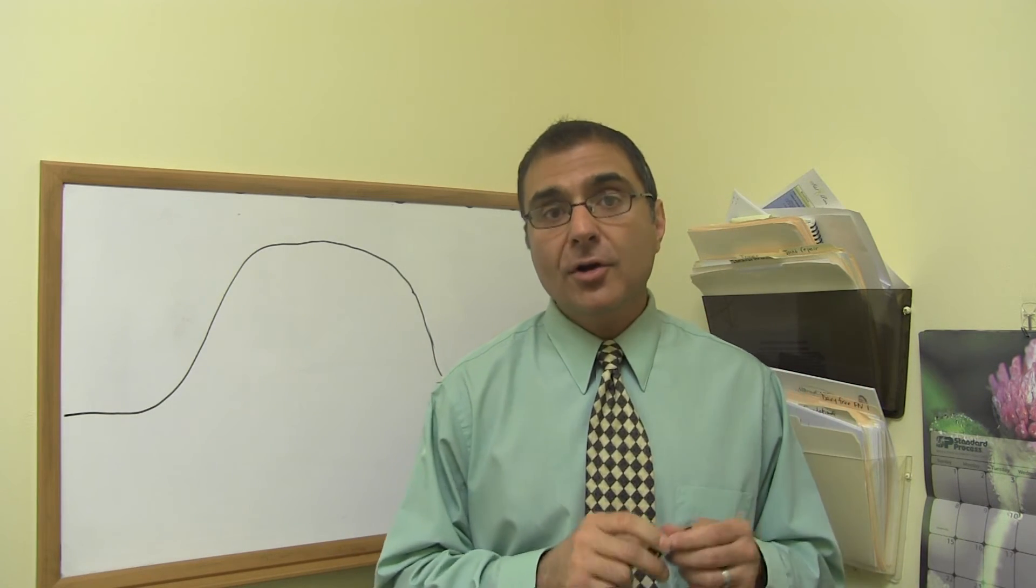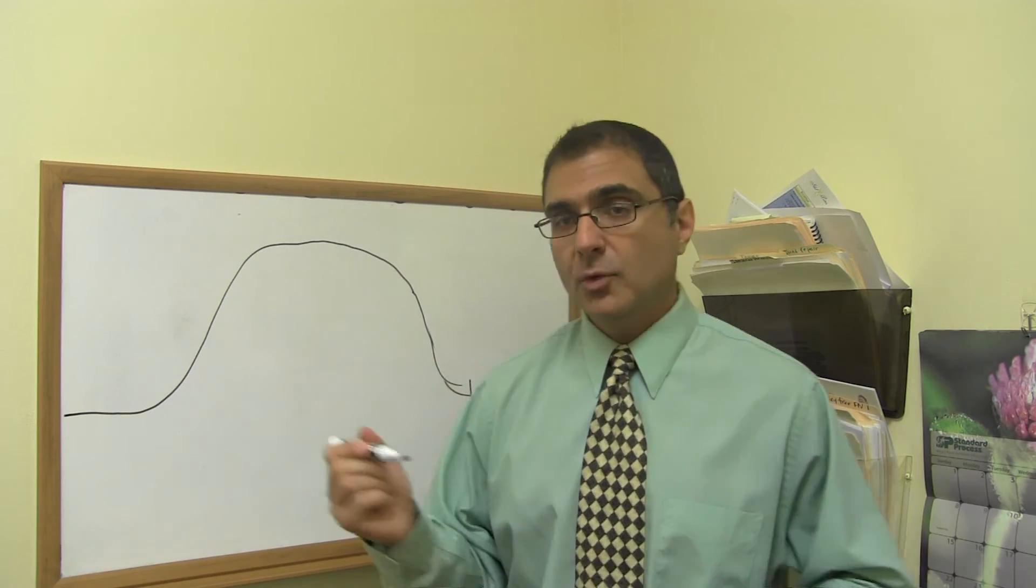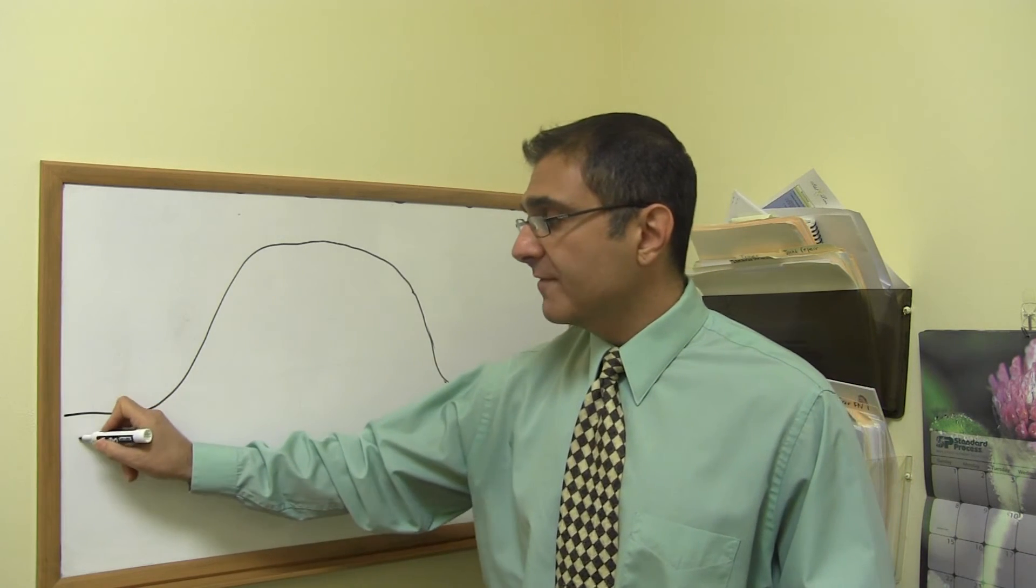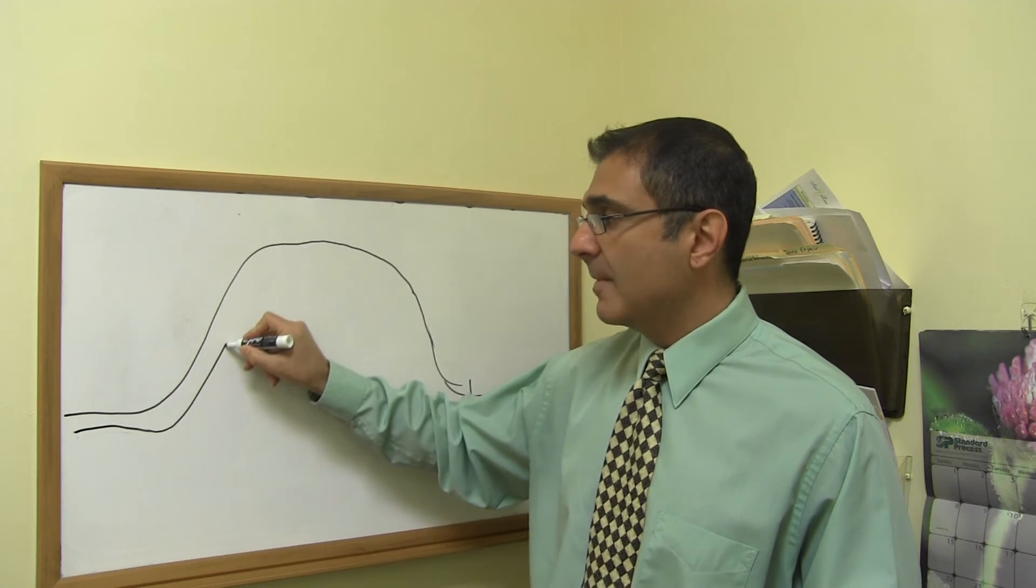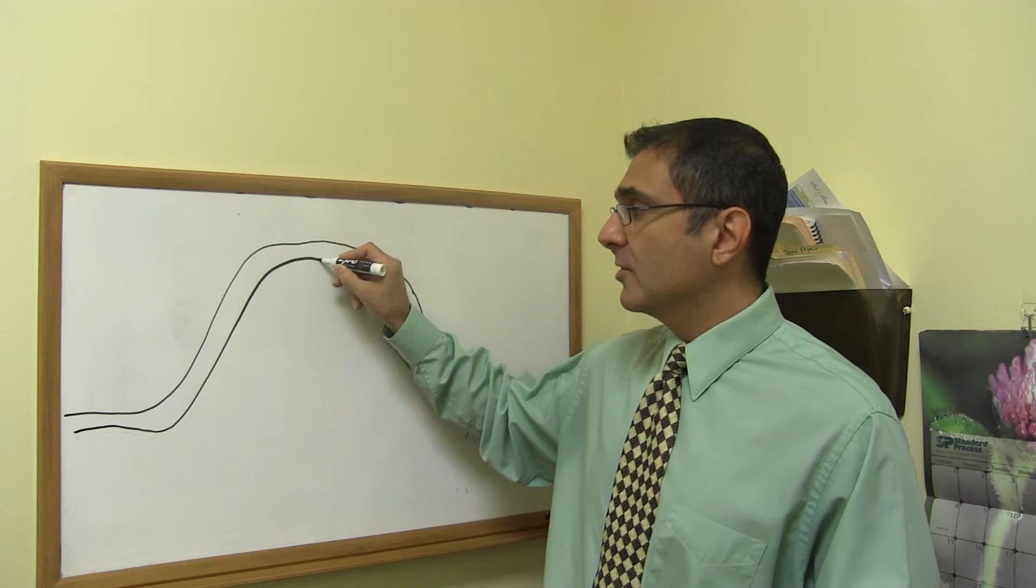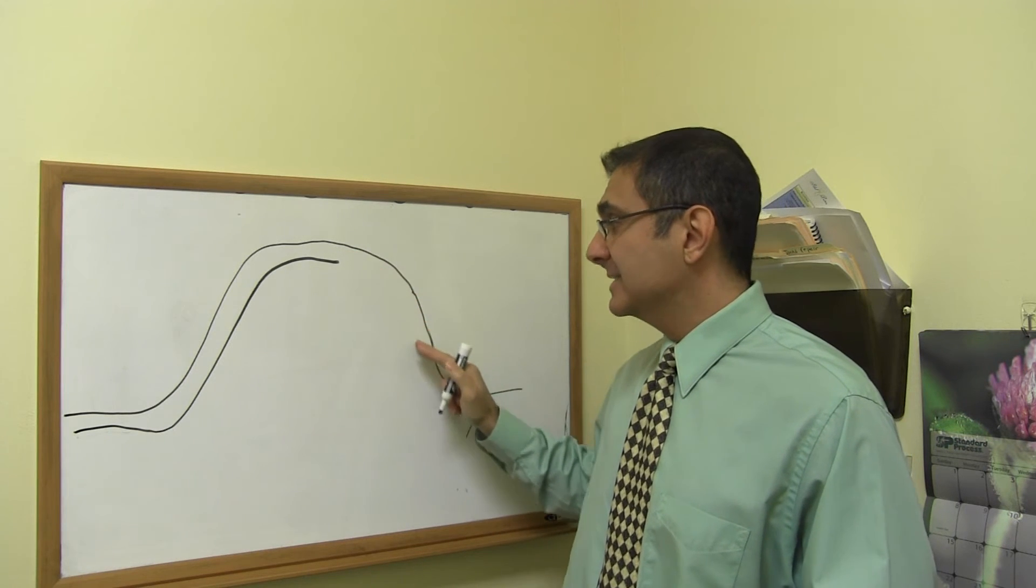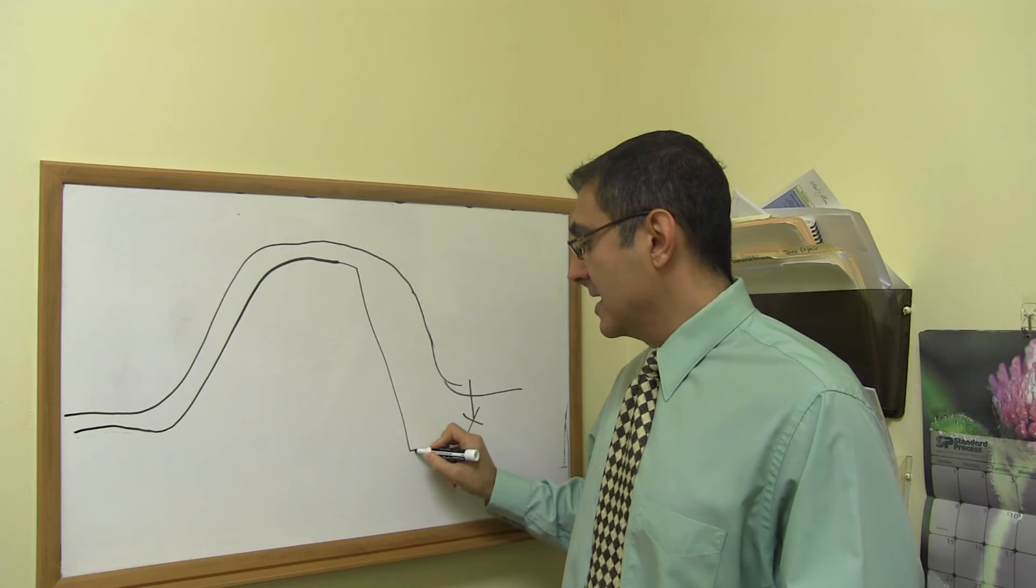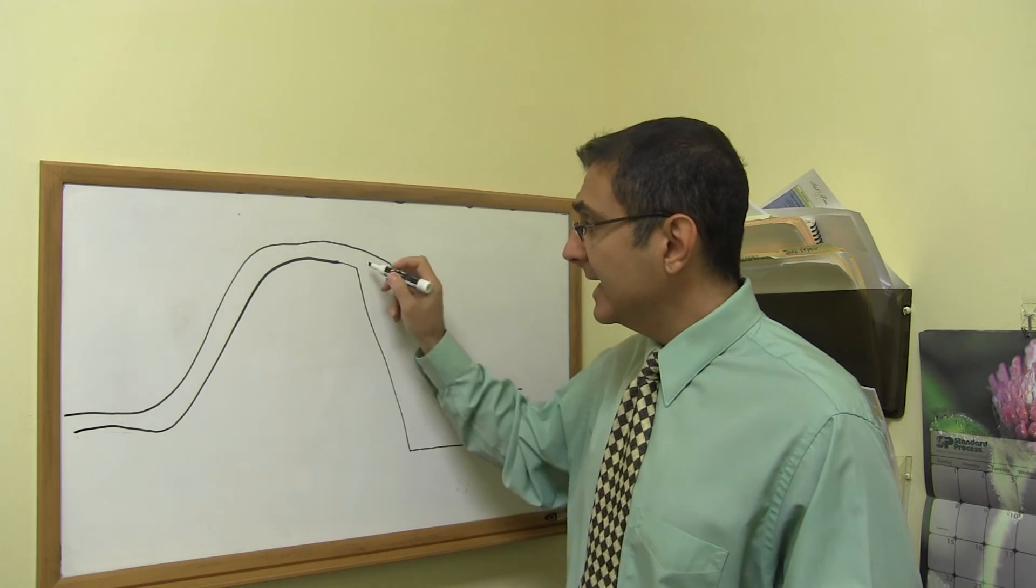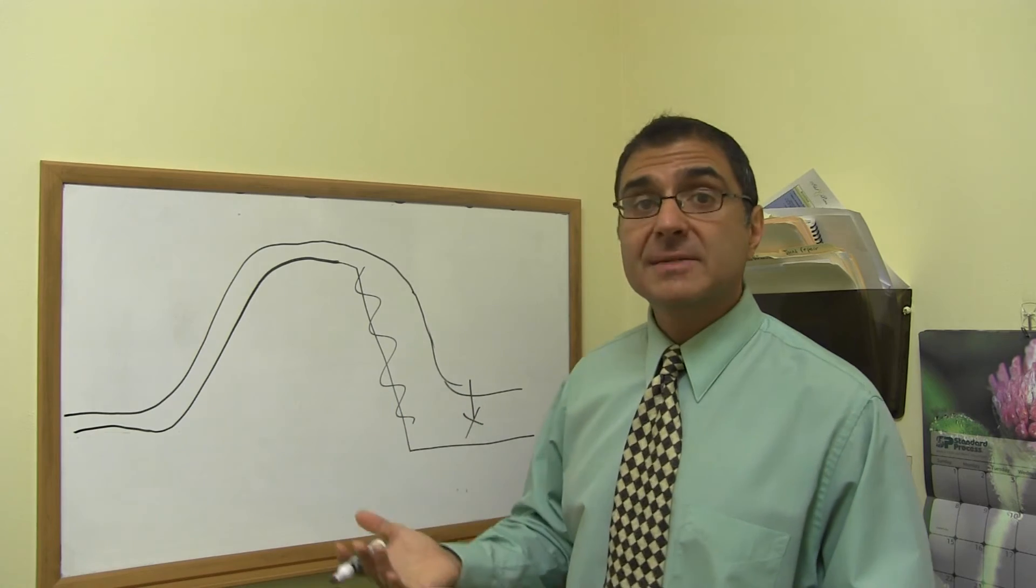Now what we found was going on with her particular hormone with progesterone is it started off fine like this. It was low during menstruation. It came up. But then right around the middle of the month, instead of staying high and continuing, the last like eight days it just plummeted like this.